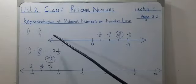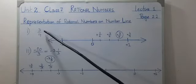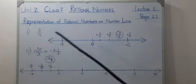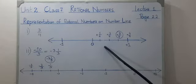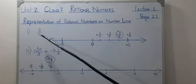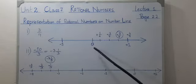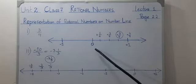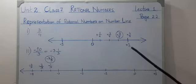Okay girls, now let's see how to plot 3 by 4 on the number line. When the numerator is less than the denominator, the positive rational number will be between 0 and 1.